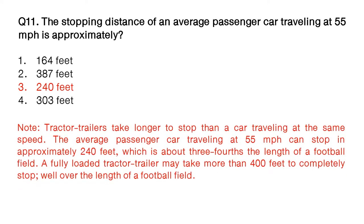Note: tractor trailers take longer to stop than a car traveling at the same speed. The average passenger car traveling at 55 miles per hour can stop at approximately 240 feet, which is about three-fourths the length of a football field. A fully loaded tractor trailer may take more than 400 feet to completely stop, well over the length of a football field.